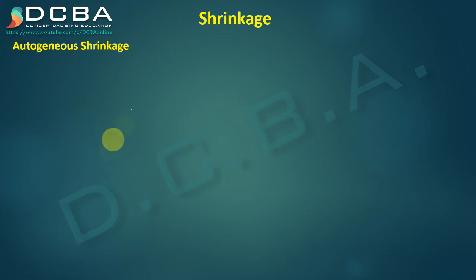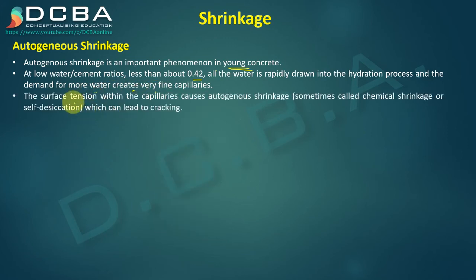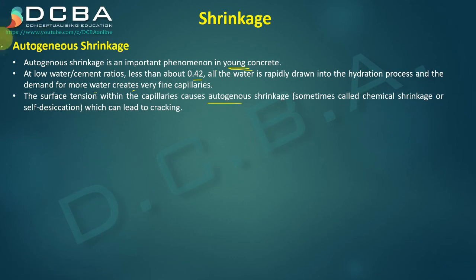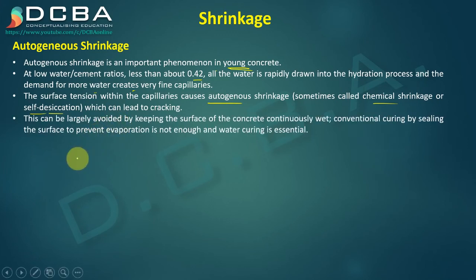Due to surface tension action in these capillaries, shrinkage of the concrete occurs. Autogenous shrinkage is an important phenomenon in young concrete at low water-cement ratios less than about 0.42. All the water is rapidly drawn into the hydration process and the demand for more water creates very fine capillaries. The surface tension within the capillaries causes autogenous shrinkage. No external cause is needed — the water-cement ratio demand itself causes the shrinkage. This is also called chemical shrinkage or self-desiccation, which can lead to cracking.